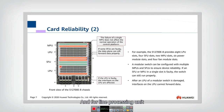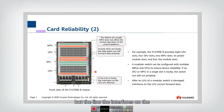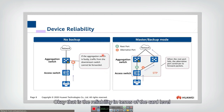For the line processing unit, one LPU corresponds to one line. So if one LPU fails, the interfaces on that LPU will be affected, but the interfaces on the other LPUs will not be affected. By providing multiple MPUs, SFUs, and LPUs, card-level reliability can be achieved.